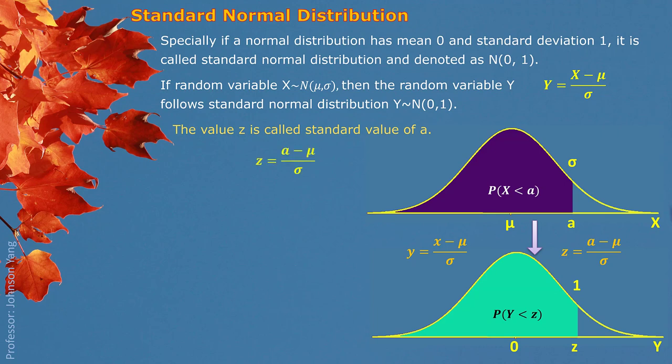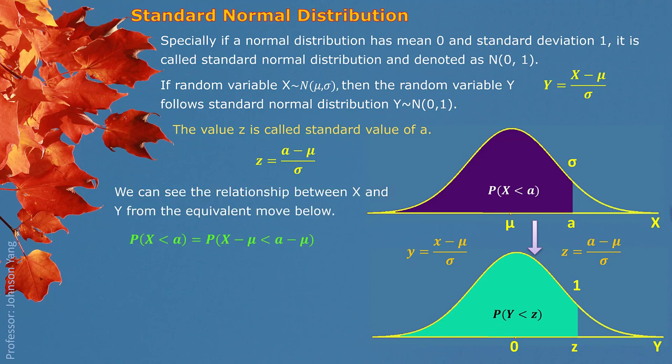Through this process, the original bell-shaped normal distribution with center mu and standard deviation sigma is transformed to center zero and standard deviation one. The probability that X is less than A is transformed to the probability that Y is less than Z. These are called equivalent events, so the probability is the same. We perform equivalent mathematical moves: from the original event, subtract mu from both sides, then divide both sides by sigma — all equivalent moves — so we turn it into Y less than Z, with the same probability.